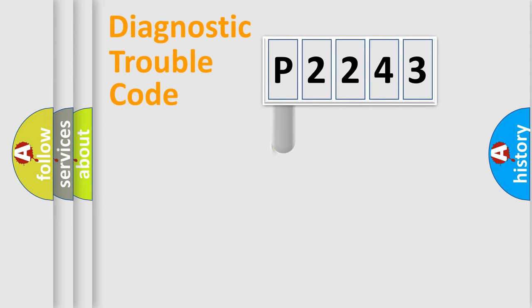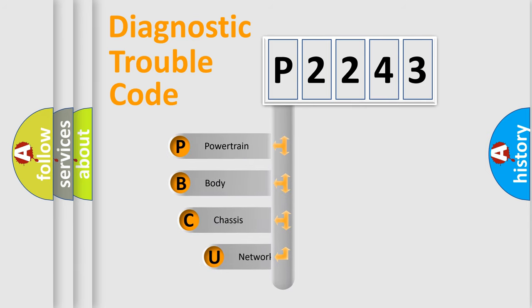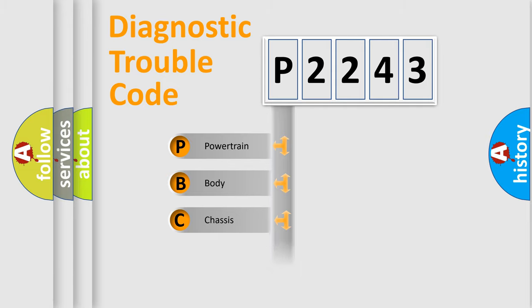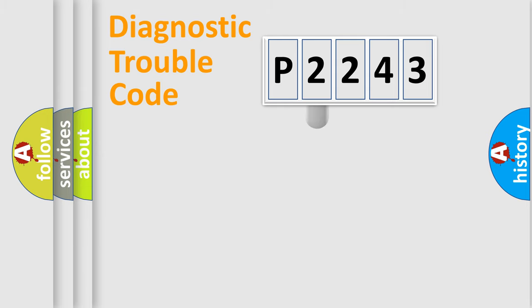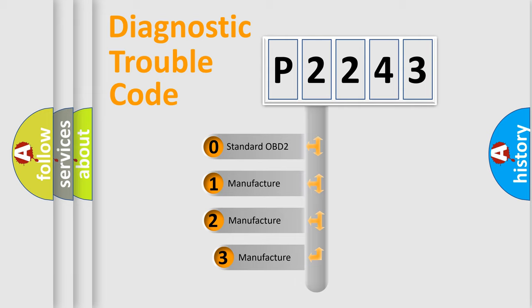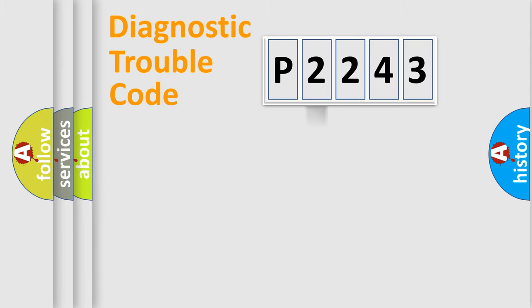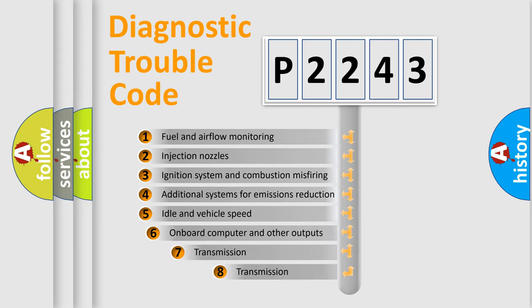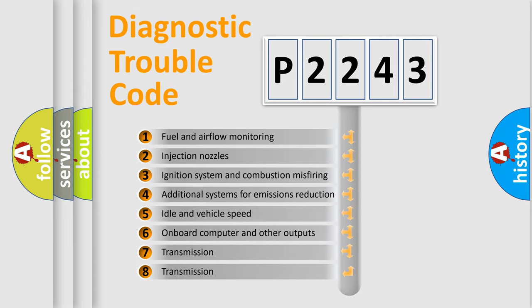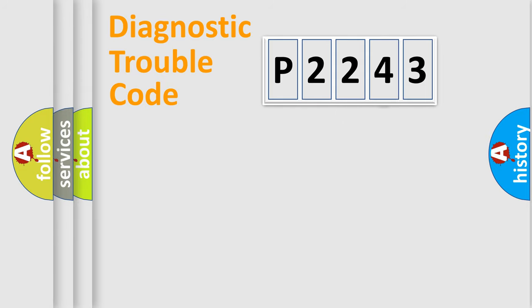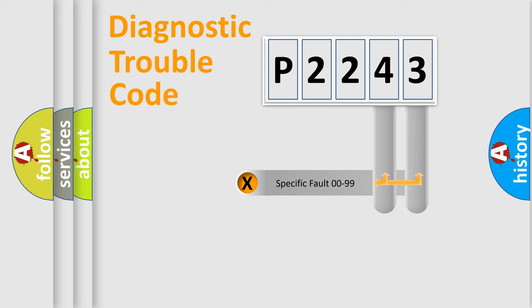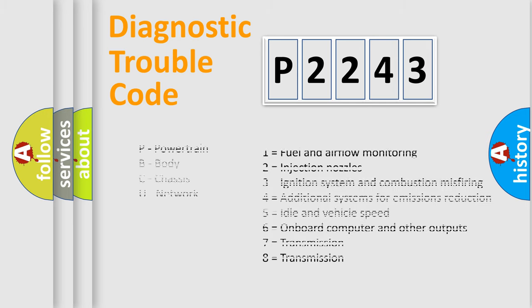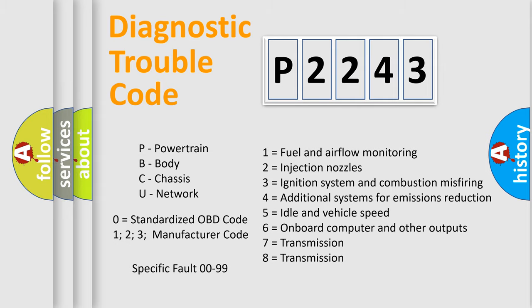Let's look at the history of diagnostic fault code composition according to the OBD2 protocol, which is unified for all automakers since 2000. We divide the electrical system of an automobile into four basic units: Powertrain, Body, Chassis, and Network. This distribution is defined in the first character of the code. If the second character is zero, it is a standardized error. Numbers 1, 2, or 3 indicate a manufacturer-specific error. The third character specifies a subset of errors, and this division is valid only for the standardized DTC code. Only the last two characters define the specific fault of the group — but this division applies only when the second character is zero.